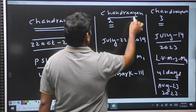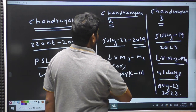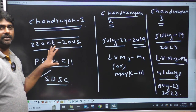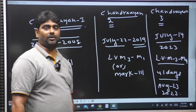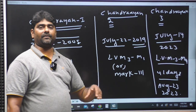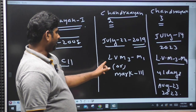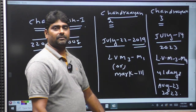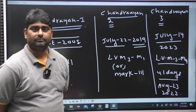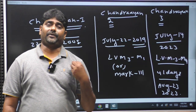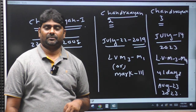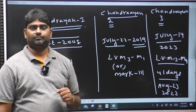Chandrayaan-2 was launched on July 22, 2019. It was intended for a south pole landing, with a Pragyan rover. However, the lander had a rough landing in the last minute and crashed. The LMV3-M1 vehicle was used, but the mission's soft landing failed.